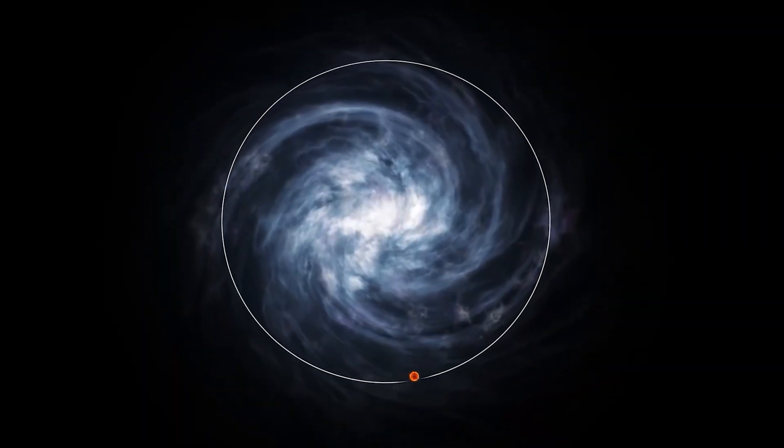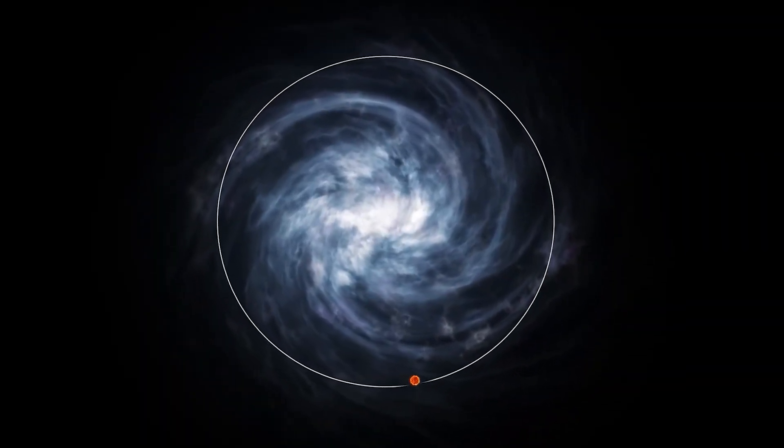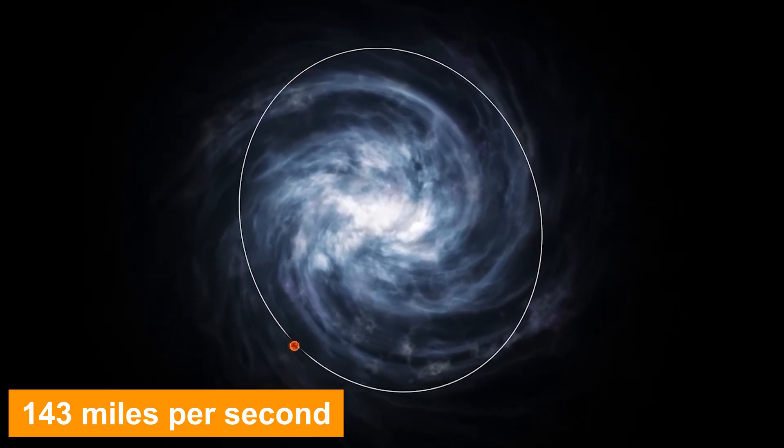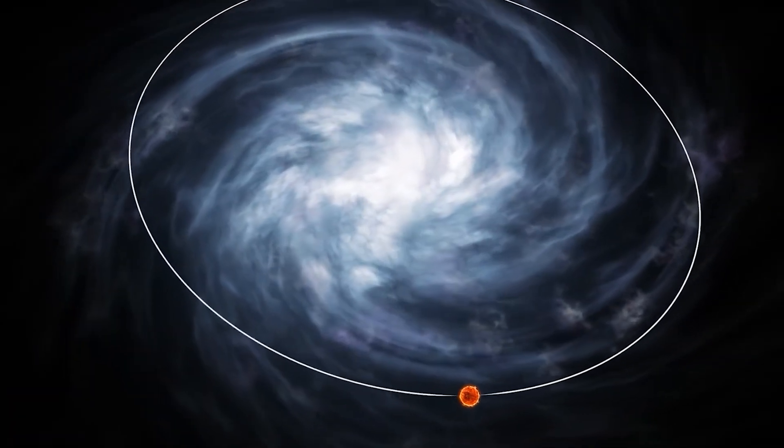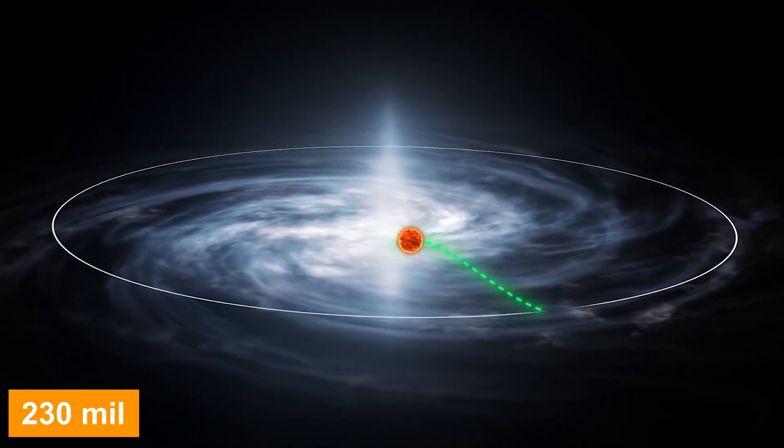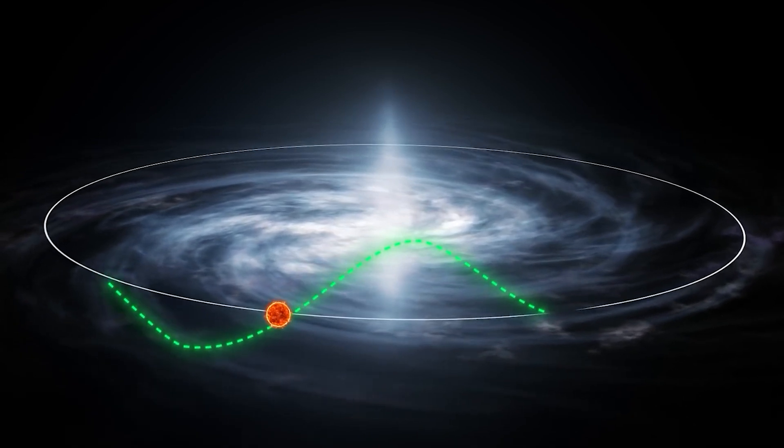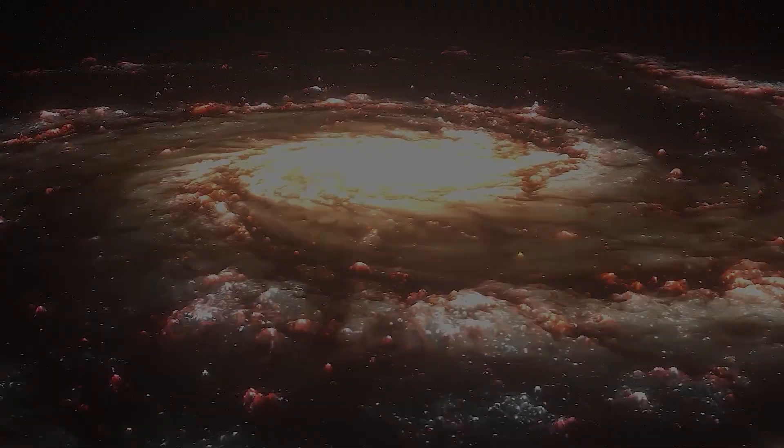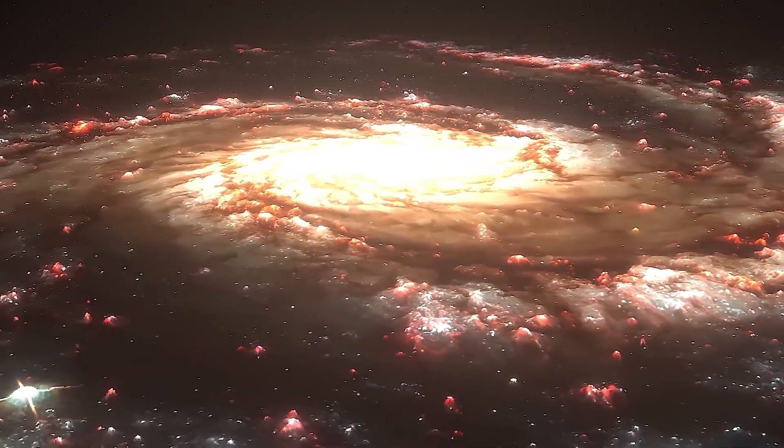Just as the Earth orbits the sun, the sun also orbits around the Milky Way's center at a speed of about 143 miles per second, completing one orbit approximately every 230 million years. This cosmic journey takes the sun, and subsequently Earth, through different regions of the galaxy, exposing us to varying cosmic environments.